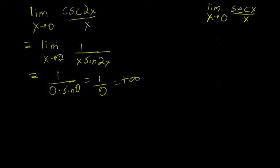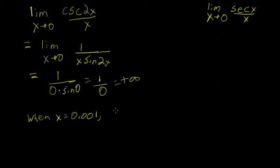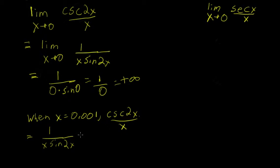As you're approaching 0 from the right, you're looking at values like x equals 0.001. So cosecant of 2x over x when x equals 0.001 is going to be 1 over x times sine of 2x, which is 1 over 0.001 times the sine of 0.002.